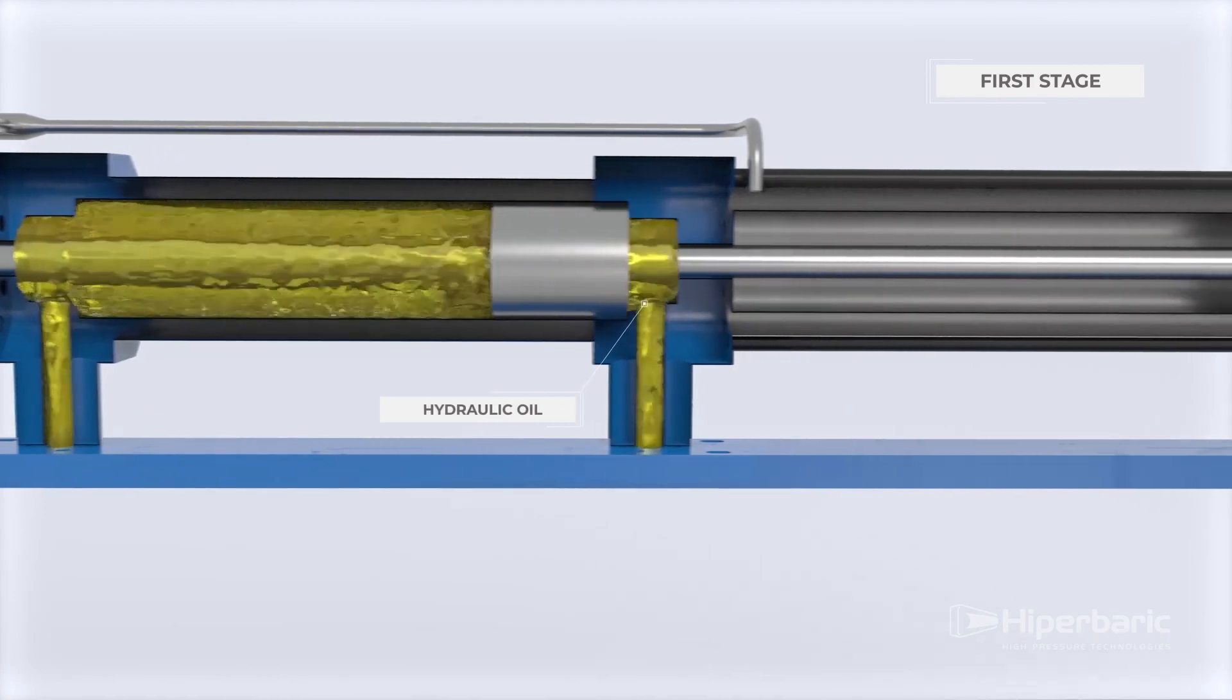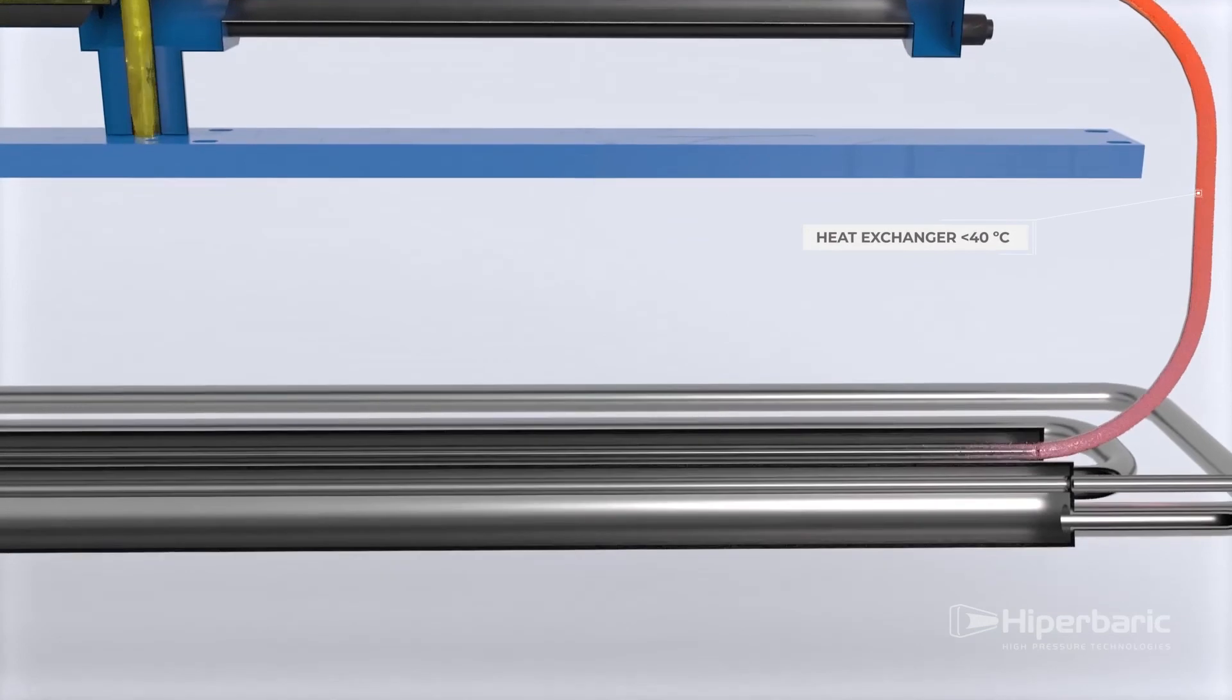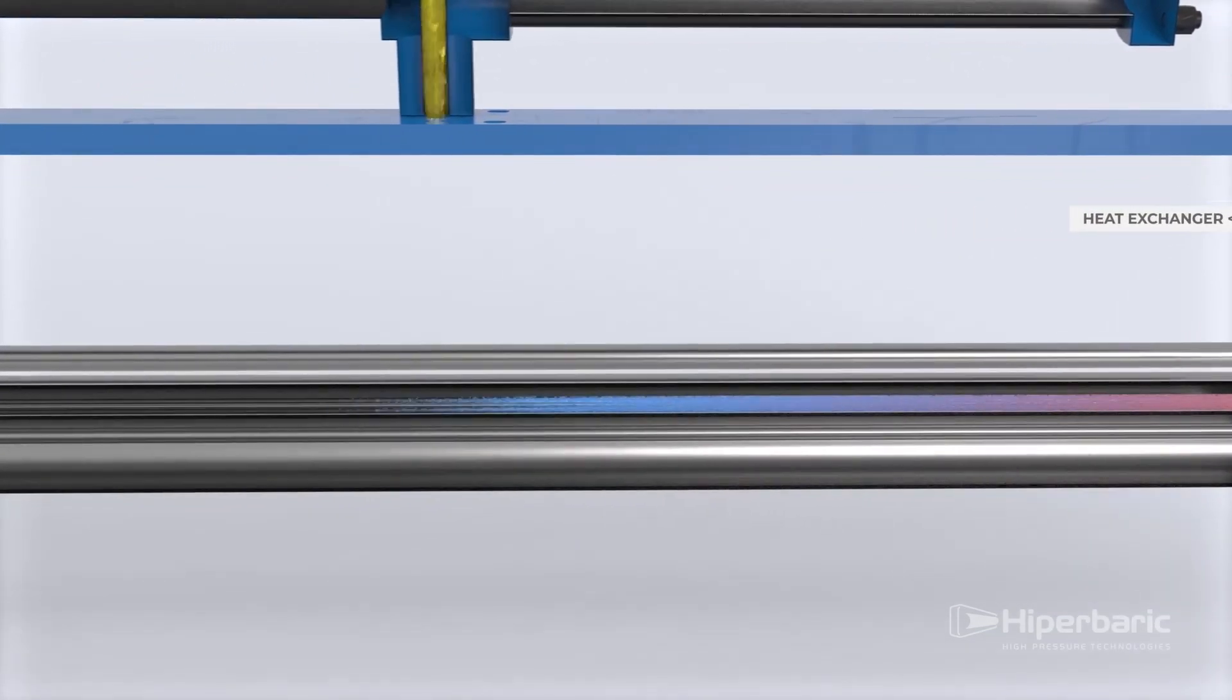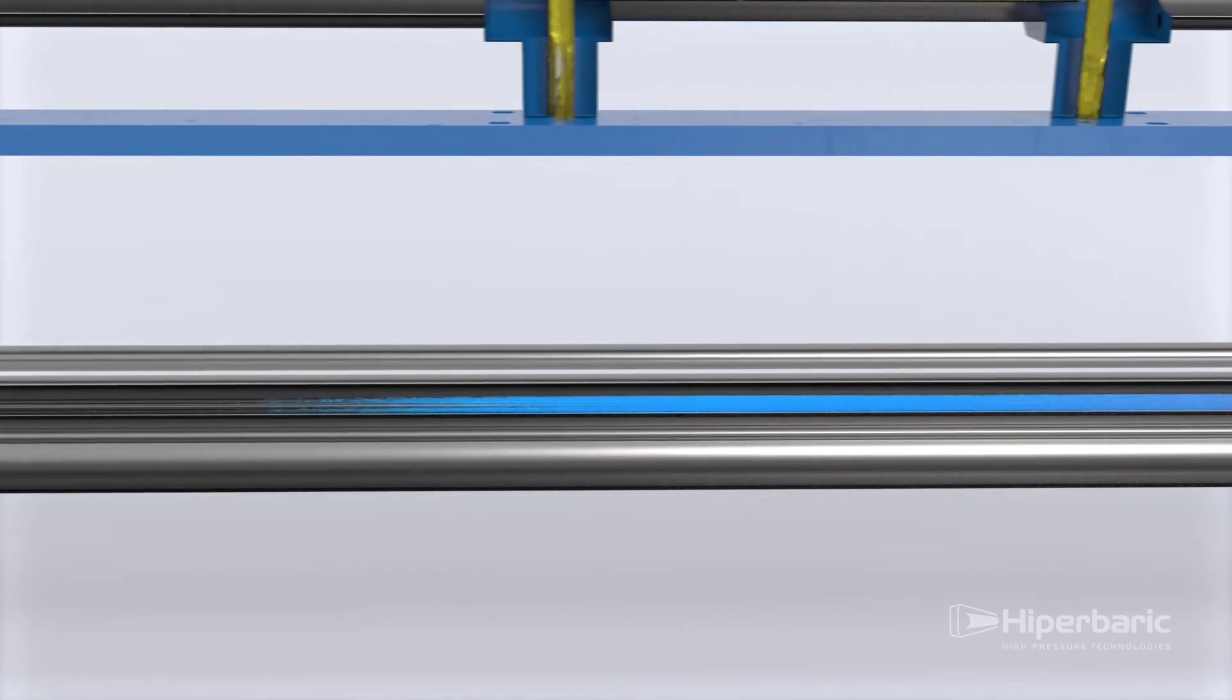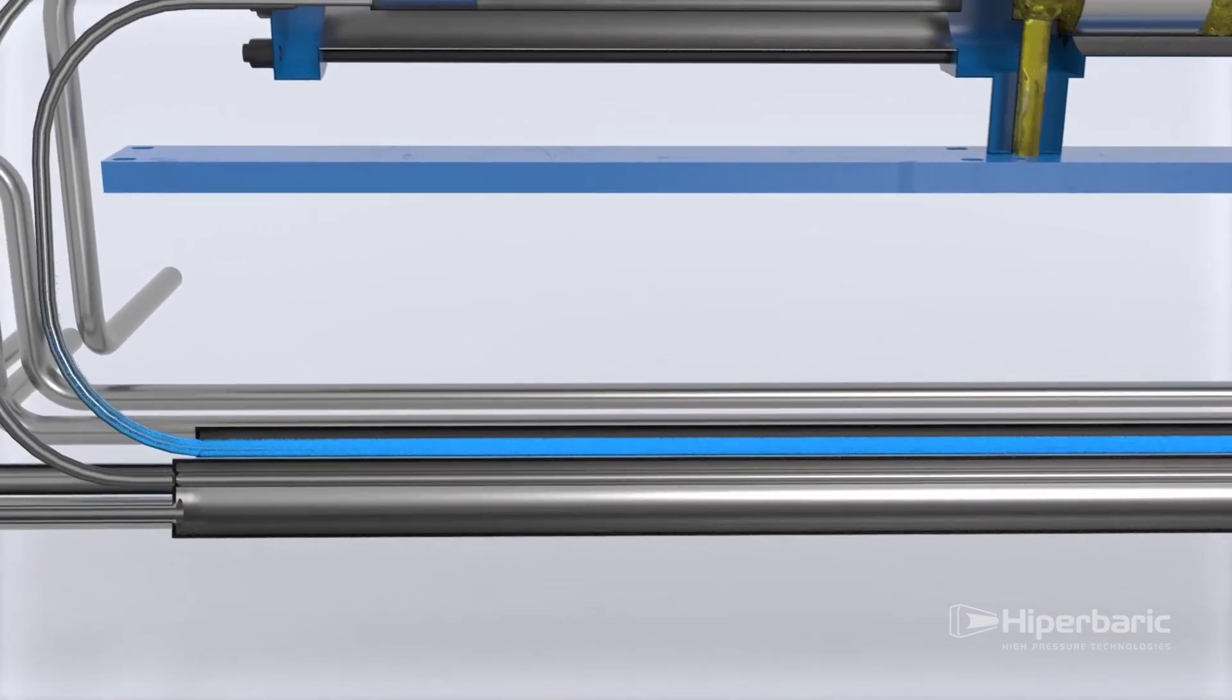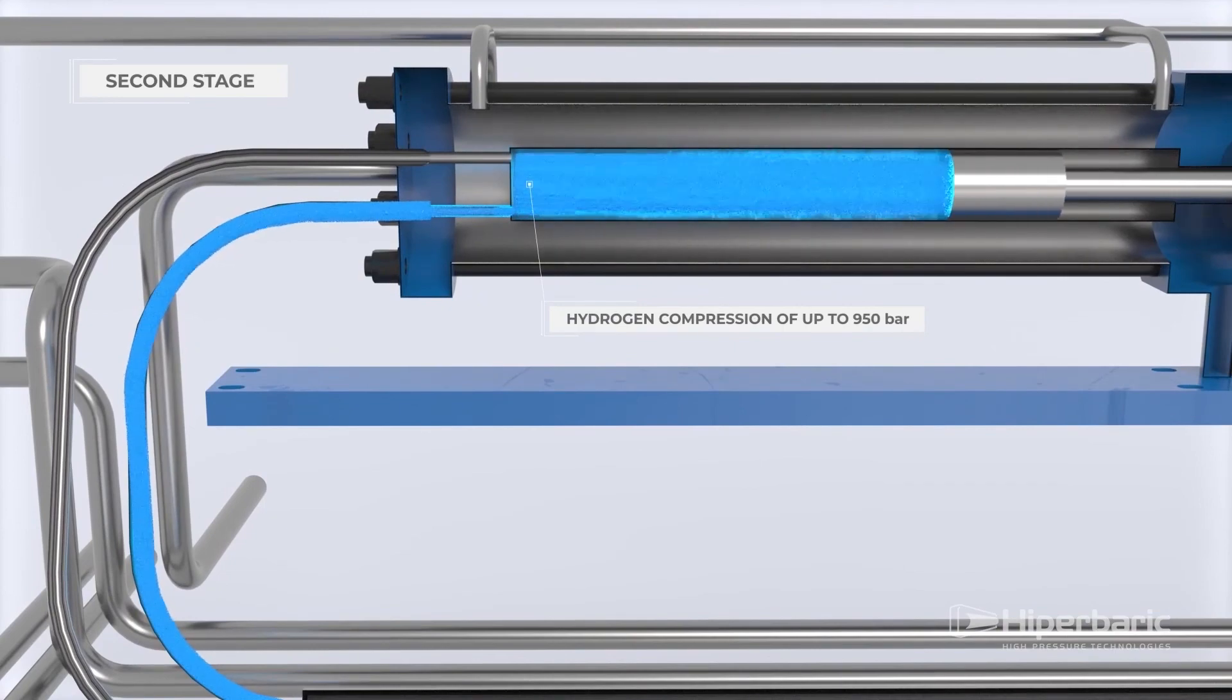The gas then exits at an intermediate pressure between the intake pressure and the maximum outlet pressure, towards the second stage through a heat exchanger connected to the chiller, which reduces its temperature to less than 40 degrees. In the second stage, the same process is carried out and allows the maximum compression of hydrogen to be achieved, which can reach 950 bar.